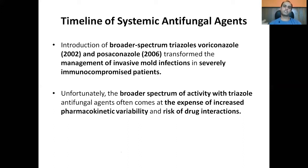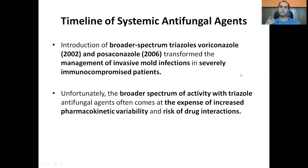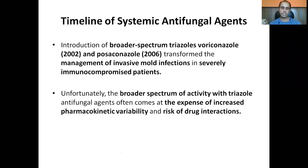The similarity of 14-alpha-demethylase to CYP450 means azoles also inhibit human CYP450. Imidazoles like clotrimazole and ketoconazole are distinguished from triazoles like fluconazole, itraconazole, voriconazole, and posaconazole by their chemical structure: imidazoles have two nitrogen atoms in the azole ring, while triazoles contain three nitrogen atoms.